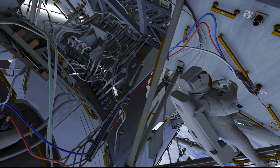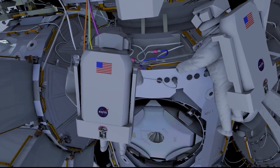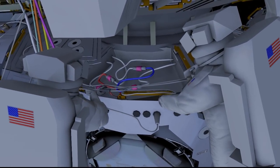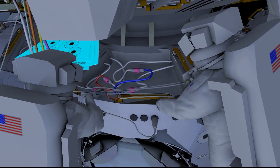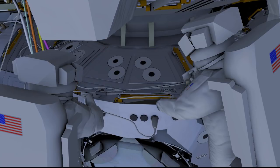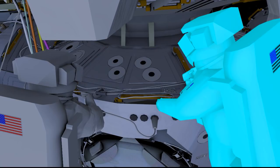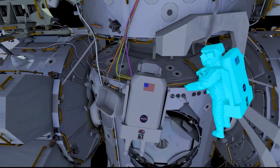Once finished routing that cable, EV2 will come down and help EV1 secure the micrometeoroid orbital debris shield over the Node 1 nadir worksite. From there, the crew will transition back to the airlock to pick up bags for the next task.